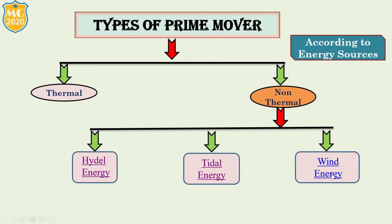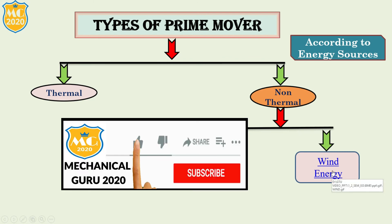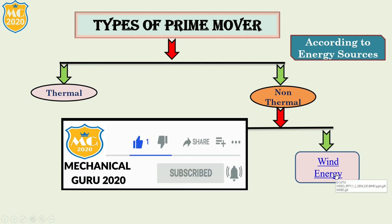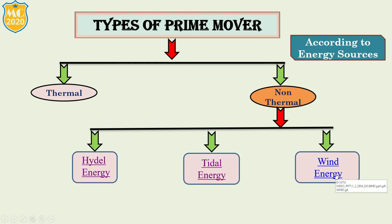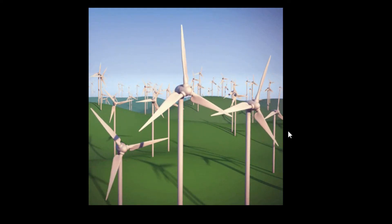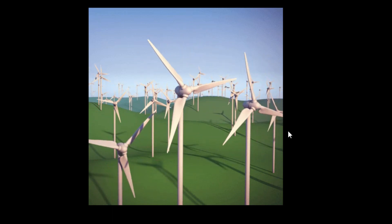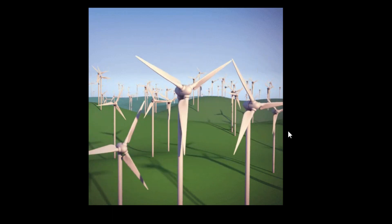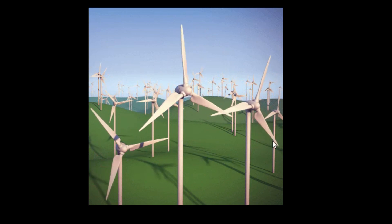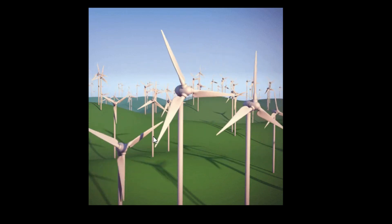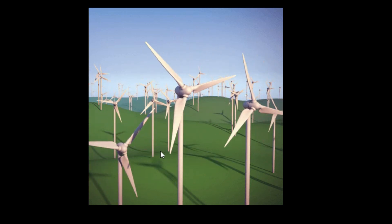The last one is wind energy. Wind energy is used to produce electricity using kinetic energy created by air in motion. The electricity is produced using this kinetic energy, which is created by air in motion. This is wind energy.